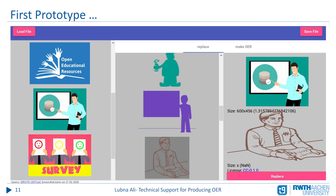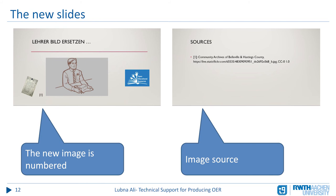The chosen image will be displayed with its license information in the right column, as can be seen here. By clicking the replace button and then the save file button, the new OER image will replace the old one and the new slide set will appear. The found image will get a reference number, which will be listed with the source and license information at the end of the slide set.